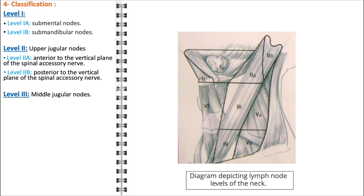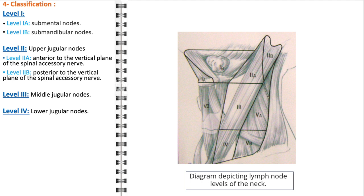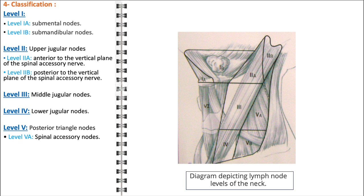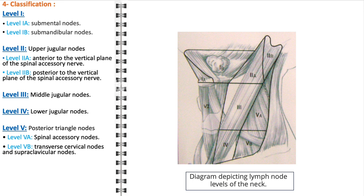Level 3 contains the middle jugular nodes, which are key in draining the pharynx, larynx, and thyroid gland. Level 4, the lower jugular nodes, extends from the clavicle to the cricothyroid notch and includes nodes that drain portions of the lower larynx and thyroid gland. Level 5 refers to the posterior triangle nodes, categorized as level 5a, containing the spinal accessory nodes that drain the posterior scalp and neck, and level 5b, which includes the transverse cervical nodes and supraclavicular nodes that primarily drain the upper thorax and parts of the arm via the lymphatic ducts.